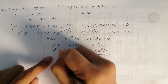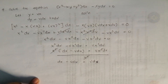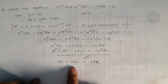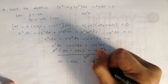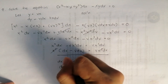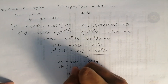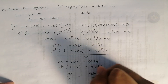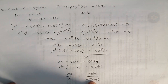Continuing: dx minus v dx equals vx dv. Factoring: dx(1 minus v) equals vx dv. Separating variables: dx over x equals v dv over negative(v minus 1), rearranged to make integration easier.